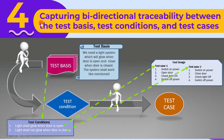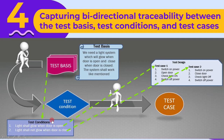The fourth activity is capturing bidirectional traceability between the test basis, test conditions, and test cases. In the test design stage, we get a test basis and test conditions as input, and high-level test cases are the output. We have to link the test conditions with test cases to know which test case belongs to which test condition, and we also have to ensure the link between test conditions and test bases are correct. This provides traceability between test basis, test conditions, and test cases.